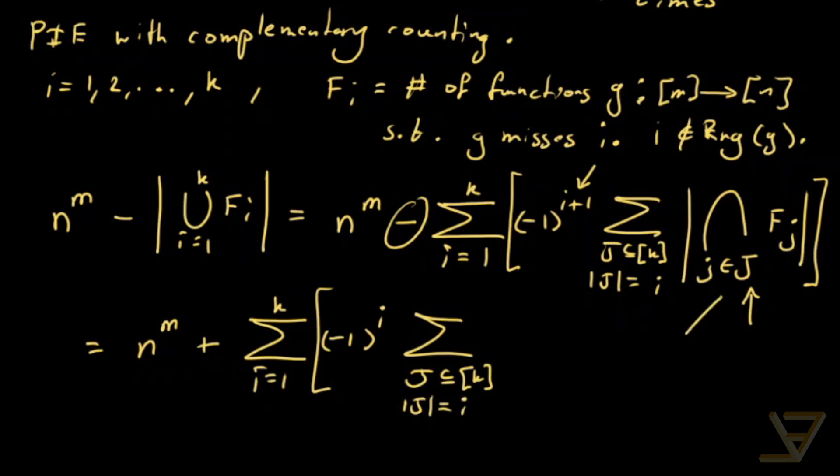And these sets, or these summands here, they're basically saying that i of the numbers are not hit in the range. So what we're going to do is find the total number of functions that don't hit those.